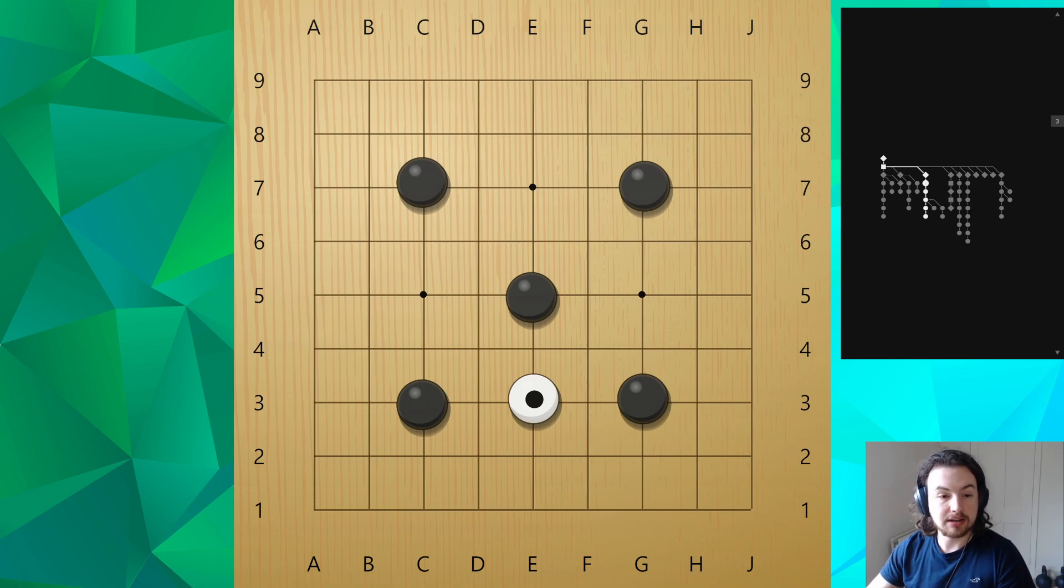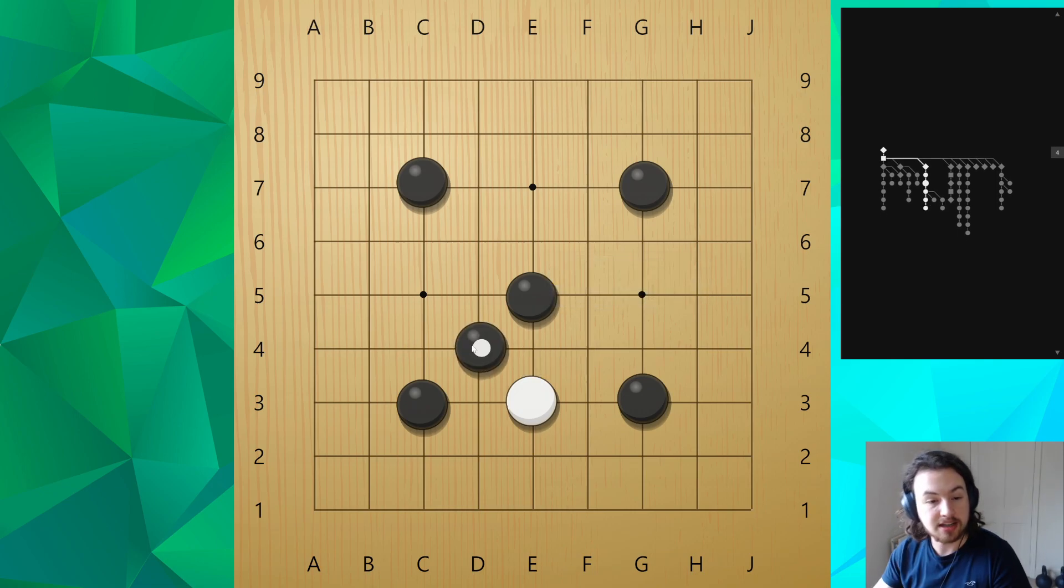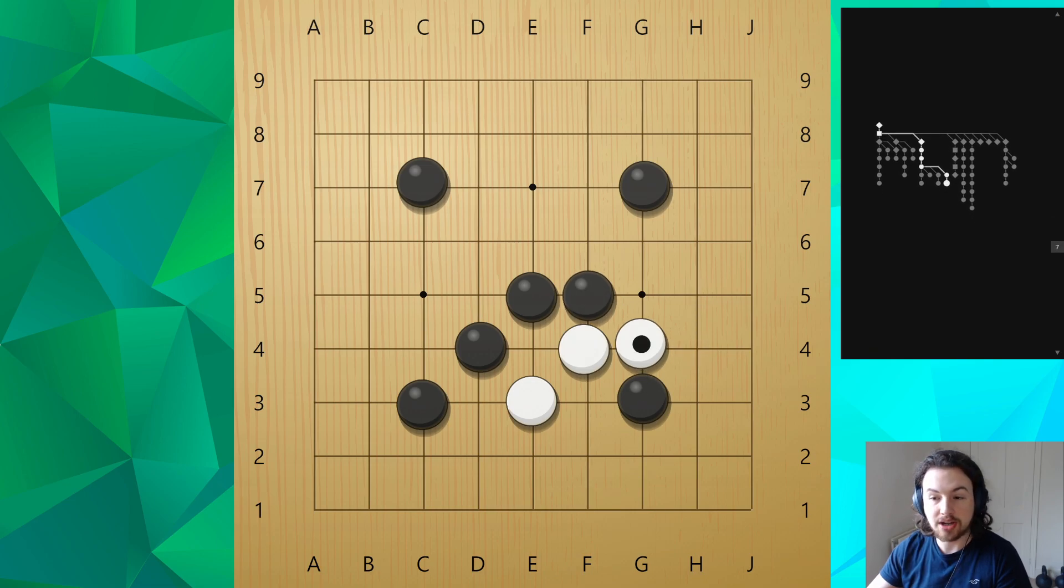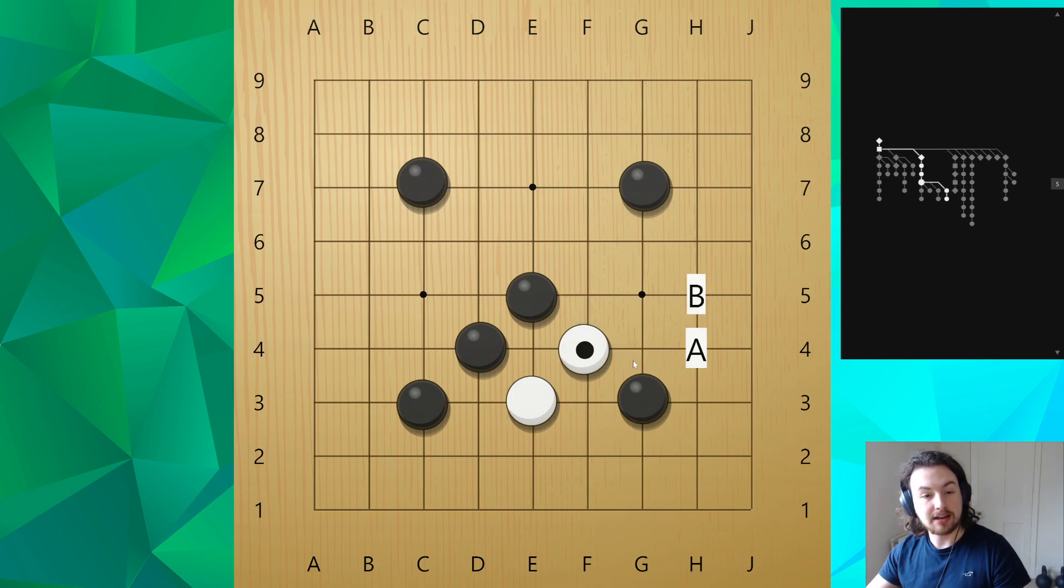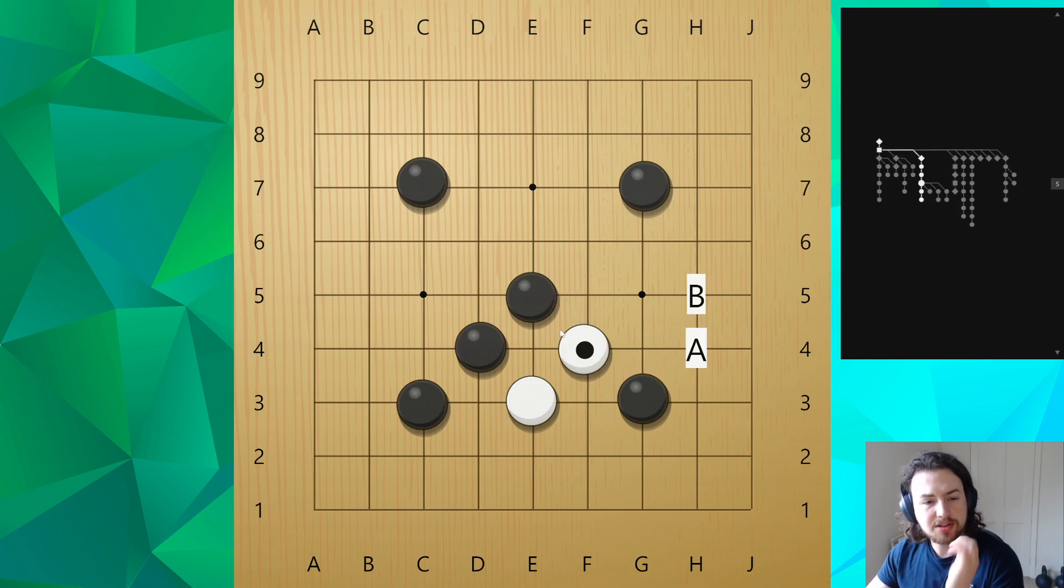This e4 stone is threatening to come through at these two points here, so a or b. So that means that black might think, oh well I'll keep my stones connected and keep strong. White might come through at f5 and then normally black's idea would be to push. But if you push, then it will create this bad shape here. This is the broken shape that I was discussing before.